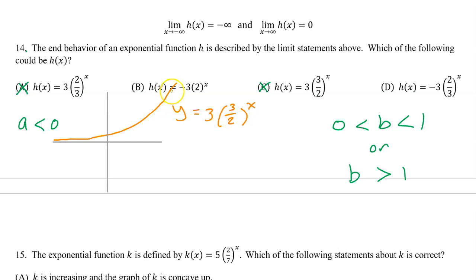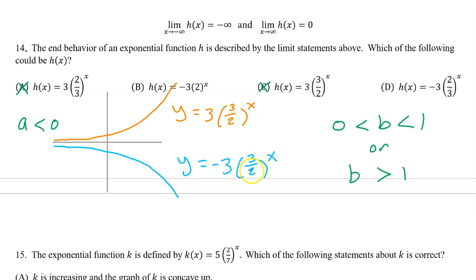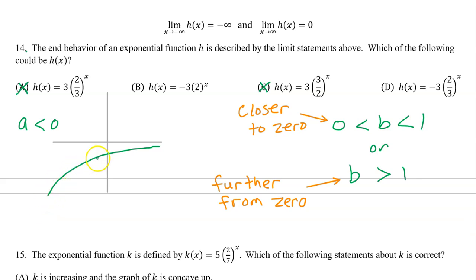But what happens if we make the a value negative? The b value is still greater than one, but now this is a reflection over the x-axis. So even though the b value is greater than one, this curve is actually decreasing. Notice that both curves are getting further away from the x-axis, further away from zero. So when the b value is greater than one, the curve gets further away from zero as we go towards the right. If the curve gets closer to zero from left to right, then the b value is between zero and one. That's the situation we have here — so which one has a b value between zero and one? This one does. So the answer is D.